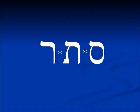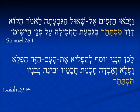Another verb root you probably know is sater, with samech, meaning 'to be hidden' or 'to hide.' In 1 Samuel 26:1 we see a participle form: mistater — 'Isn't David hiding himself?' In Isaiah 29:14 we see a third person feminine imperfect: tistater — 'it is hiding.'